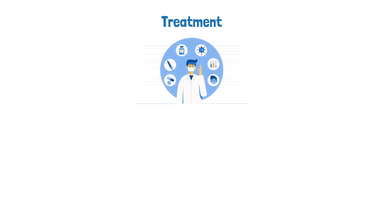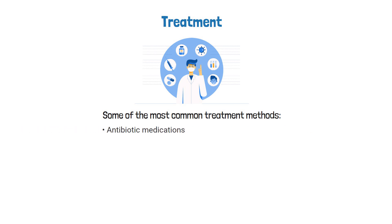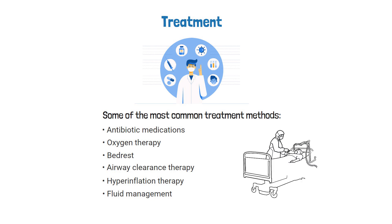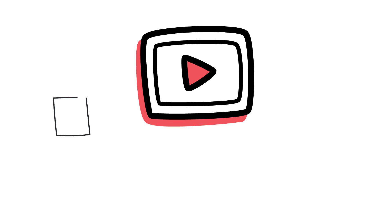Pneumonia in general should be treated on a case-by-case basis. Some of the most common treatment methods include antibiotic medications, oxygen therapy, bed rest, airway clearance therapy, hyperinflation therapy, and fluid management. Each patient may require different treatment modalities depending on their signs and symptoms, and in severe cases intubation and mechanical ventilation may be indicated.